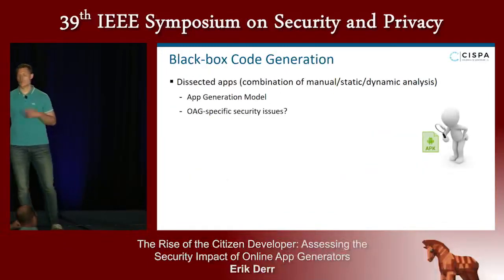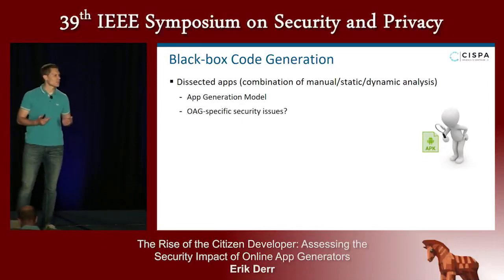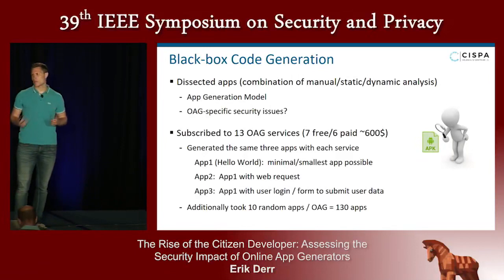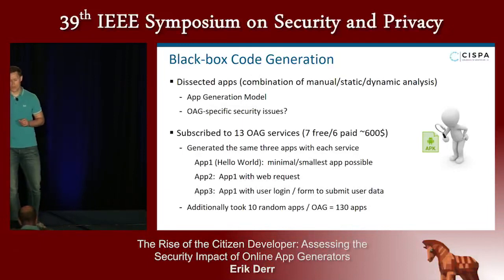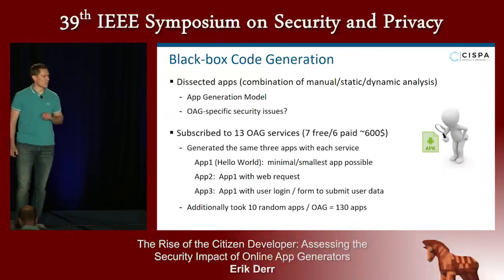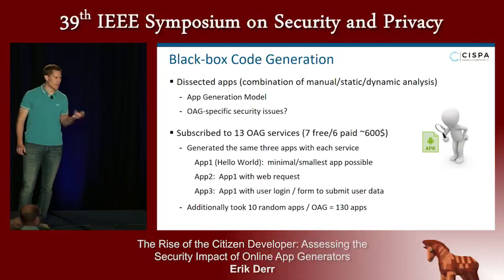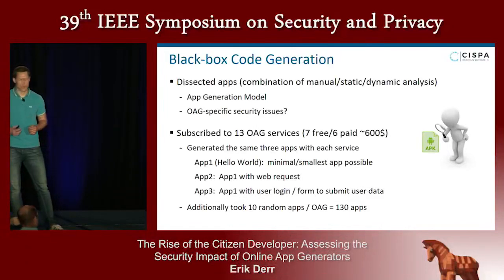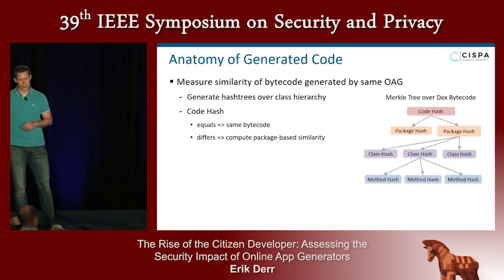What we didn't know is how these app generators actually generate their code, and whether there are specific security issues related to the generation model. To find out, we subscribed to the top 13 online app generators according to our market analysis — seven were free and six required monthly subscription fees. We generated the exact same three apps for each: a Hello World app, an app with an additional web request to our server, and an app with a module for user login to submit user data — a sensitive operation. We also took ten random apps per generator.